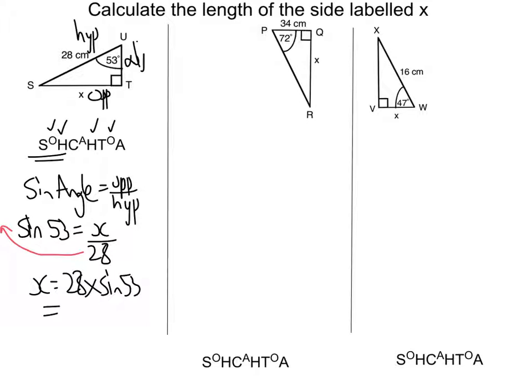Now putting it in my calculator, 28 times sine 53, I get the answer to be to the nearest centimeter, 22 centimeters.